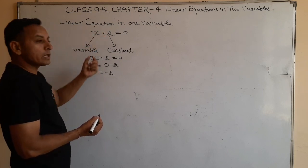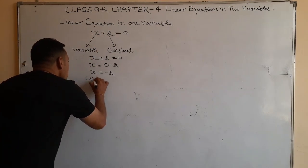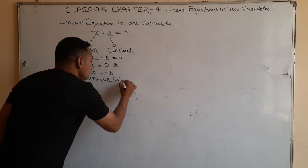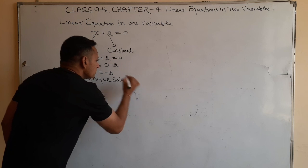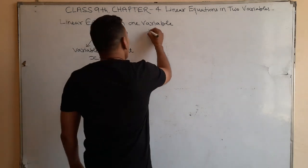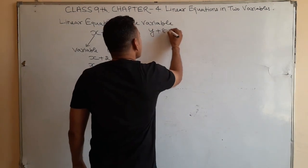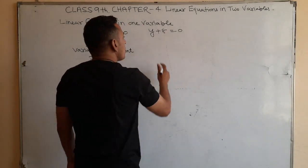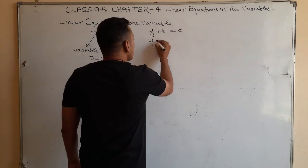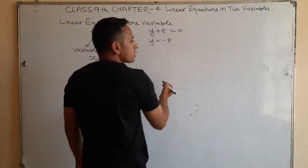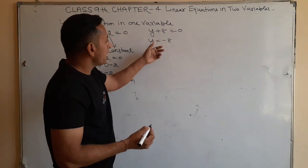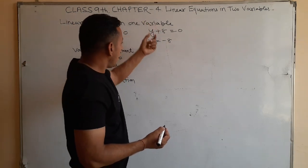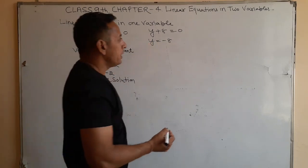x is equal to minus 2 is the solution of this linear equation, and this solution is a unique solution. Another example: y plus 8 is equal to 0. Here y is the variable and 8 is the constant term. So we get y is equal to minus 8, and this is the unique solution.